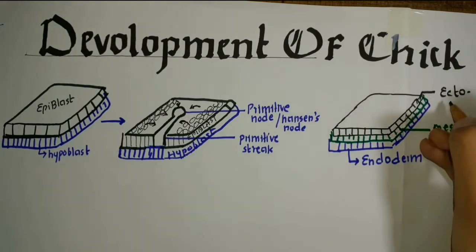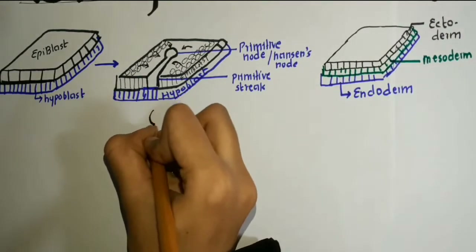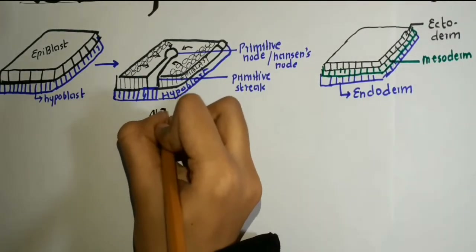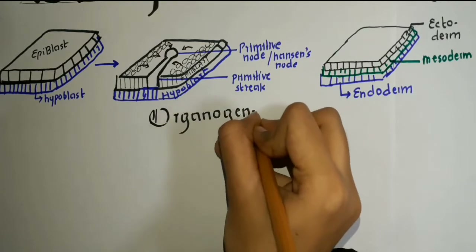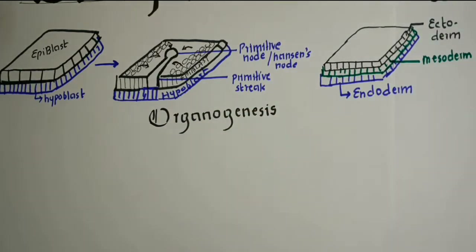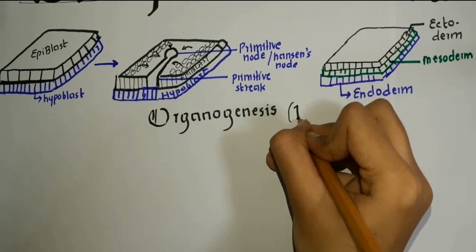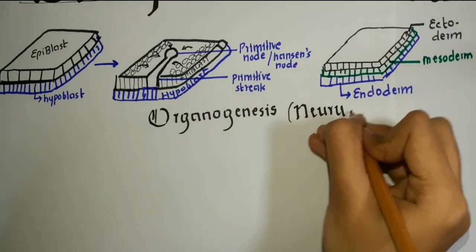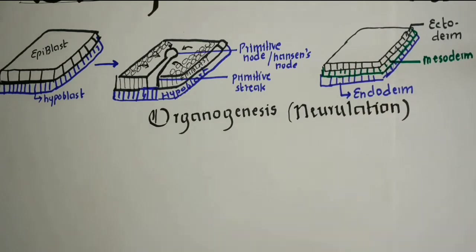Now let's come to our next topic, which is organogenesis. Organogenesis means the three germ layers are now formed and we proceed to the formation of the organs. We first study about neurulation. Neurulation means the formation of the notochord or neurula.